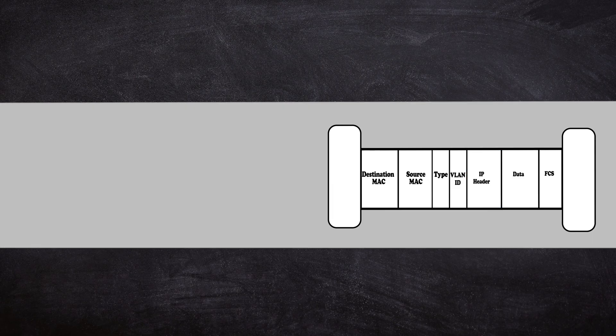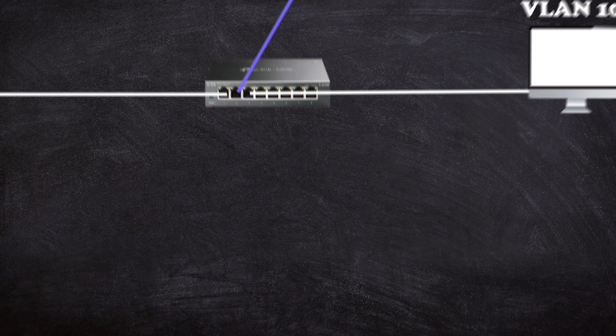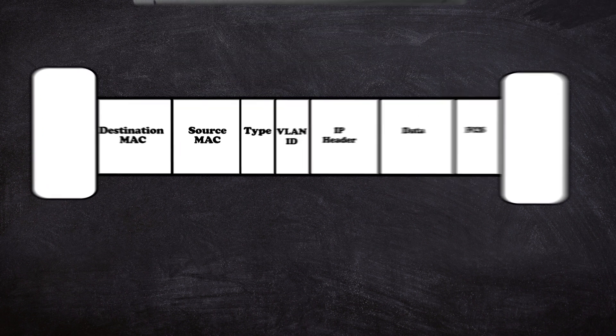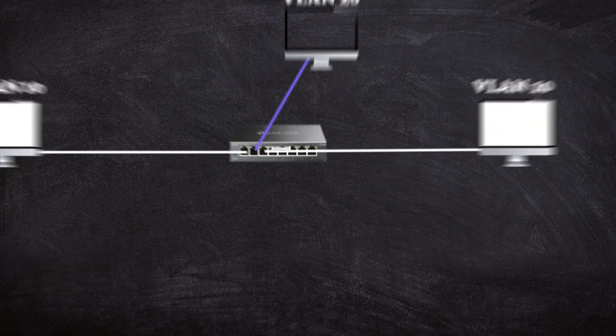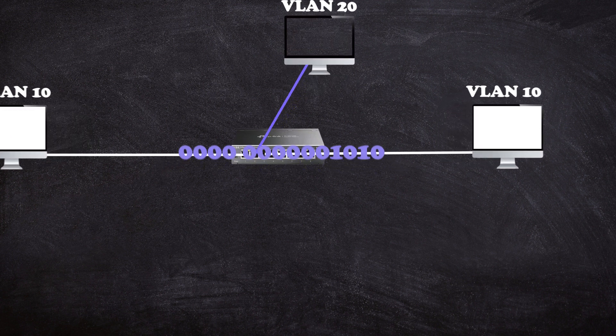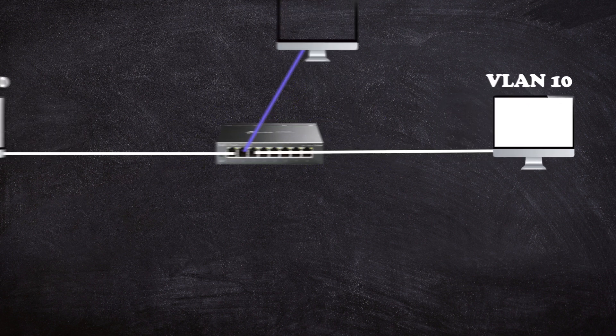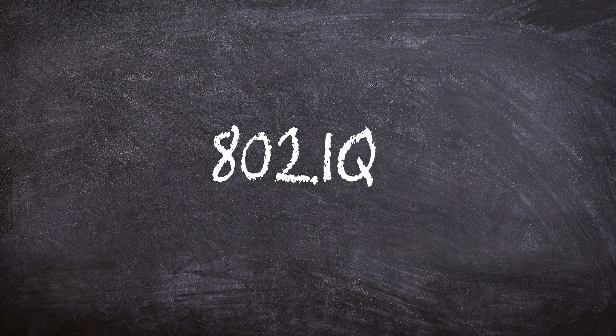Since VLANs work at Layer 2, the IP part can never be accessed by the switch. Instead, when the frame reaches the switch, the switch adds a VLAN tag ID in a specifically designated area within that frame. When the frame reaches its destination switch, the switch reads the VLAN tag and uses that information to forward the frame to the appropriate VLAN. This common method of tagging is known as 802.1Q, where the VLAN tag is inserted into the Ethernet Frame and the frame is then transmitted with the tag.